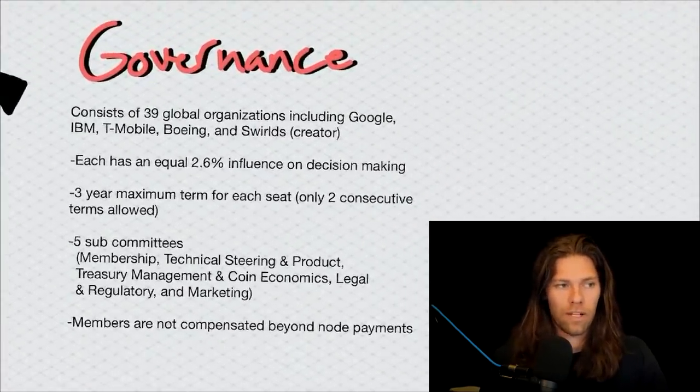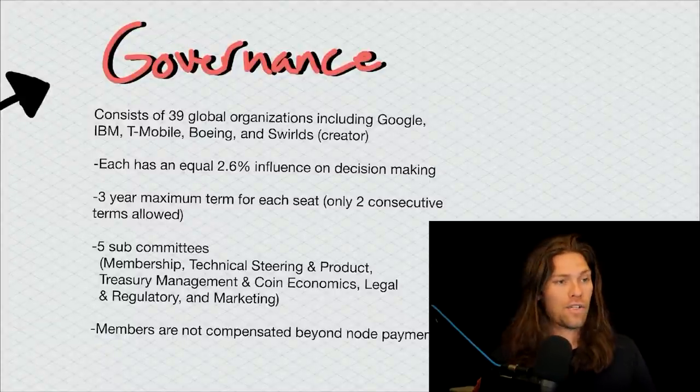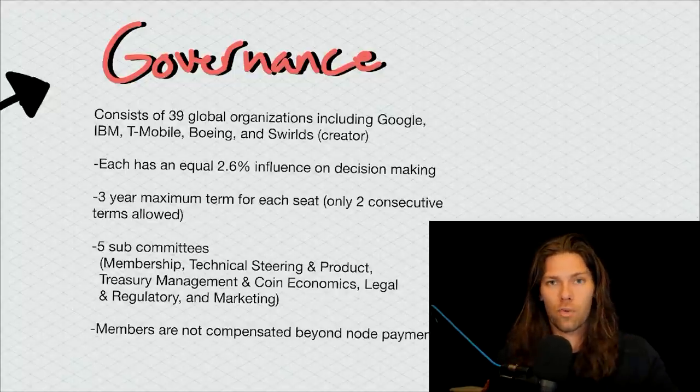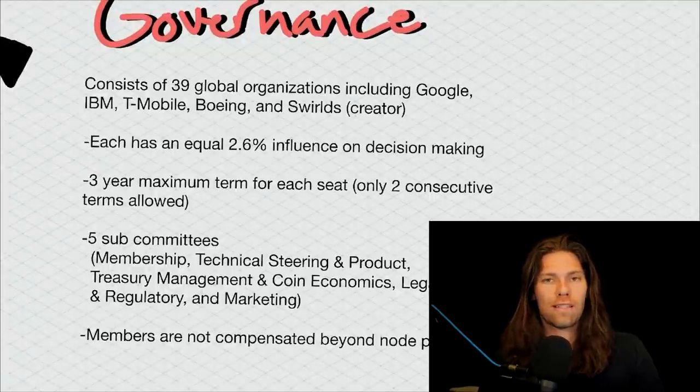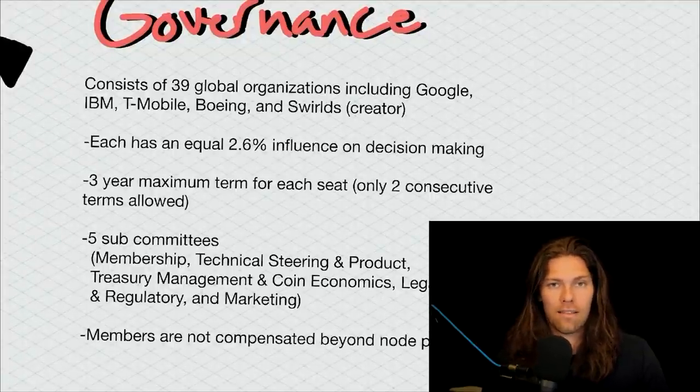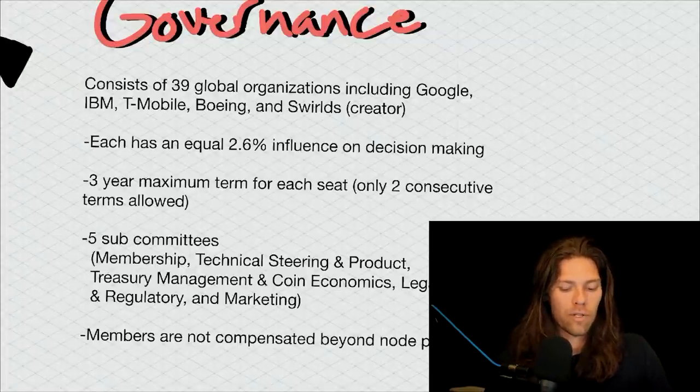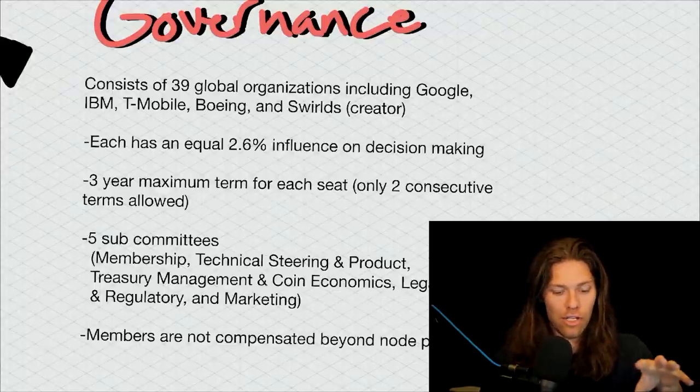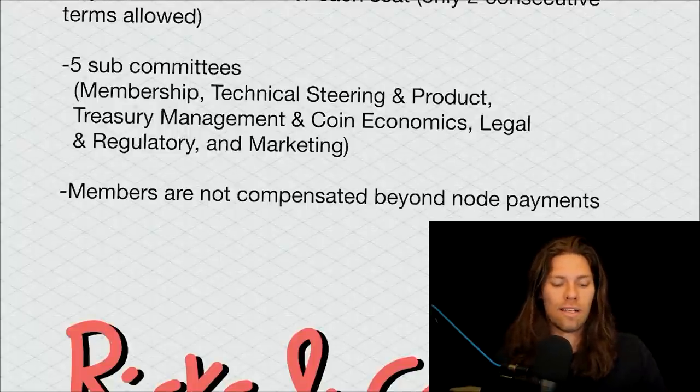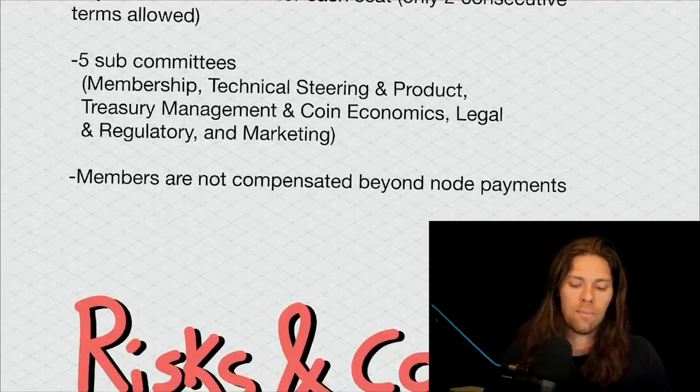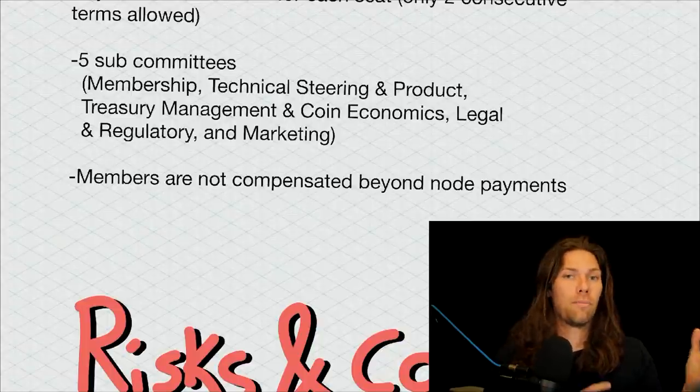Governance. I know it's boring, but it's really important in this case. Their governance consists of 39 global organizations, including some big hitters: Google, IBM, T-Mobile, Boeing, and Swirls, which is the creator of the Hedera ecosystem. Each of those organizations has an equal 2.6% influence on decision-making. It's not weighed in any way whatsoever. Each of them has equal decision-making power. There's a three-year maximum term for each seat on the organization seats, and you can only have two consecutive terms. Then we have these subcommittees that do various decision-making, marketing, tokenization, things like that. And the members are not compensated beyond their regular node payments, just for transactions within the node and validating transactions. So they're not being paid just to be a part of this. There's no perverse incentives is what they're trying to show here.